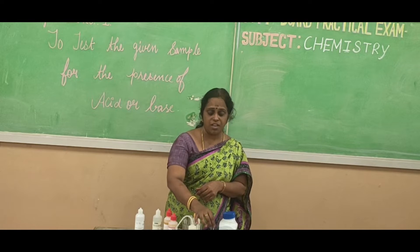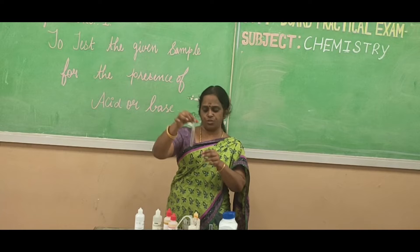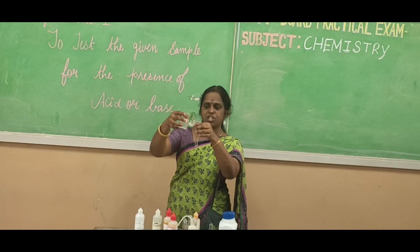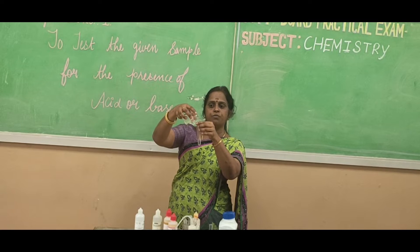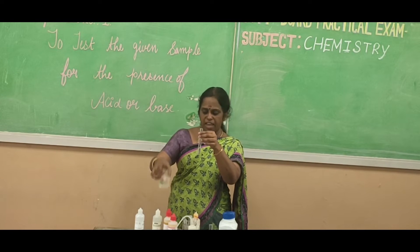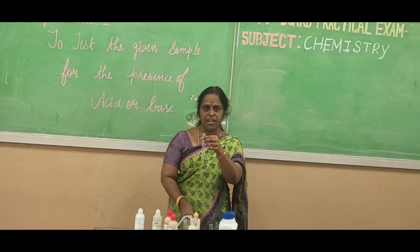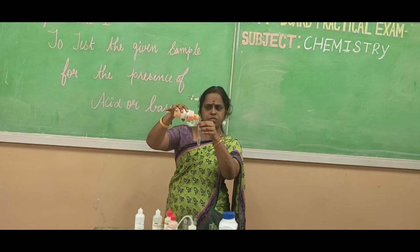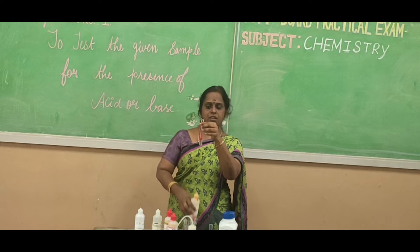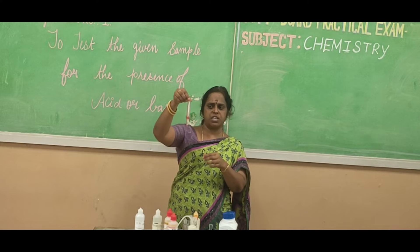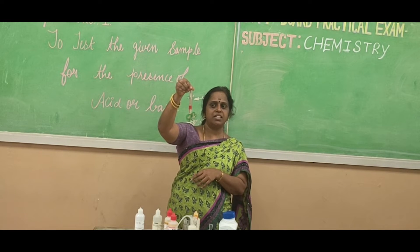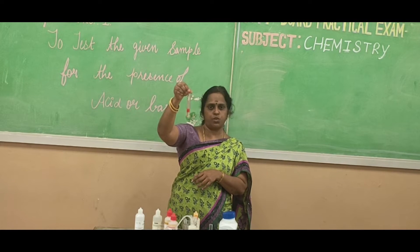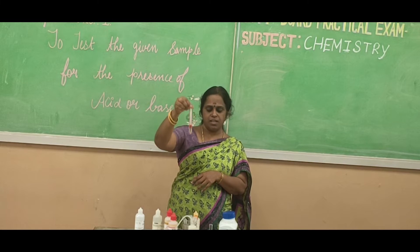Now carry out the second test. In a similar way, take a test tube and add 5 ml of the test solution. To this, add the second indicator — methyl orange. A few drops of methyl orange are added to the given test solution. What do you observe? You observe the solution turns pink in color. This clearly confirms the presence of acid.